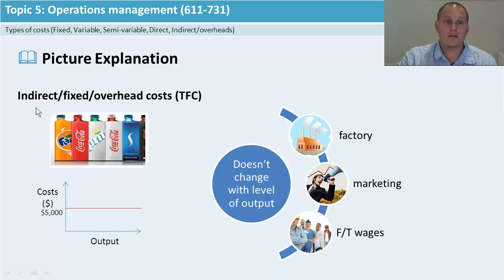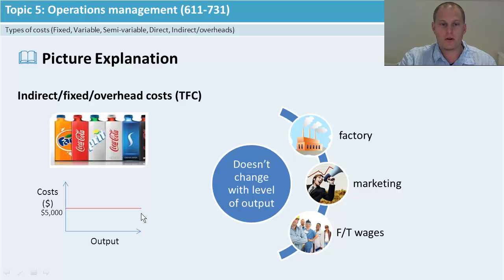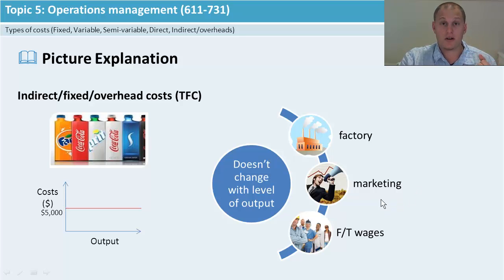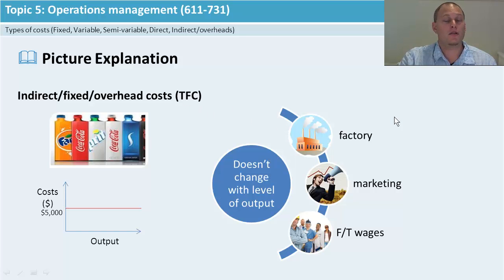The other side is the indirect, fixed, or overhead costs — these are your TFC. On the diagram, TFC just goes straight across, so even if you make nothing, the cost stays constant. In your factory this might be rent or mortgage payments at a fixed rate, your marketing costs for billboards and TV, and your full-time wages. Even if the factory's not running, you're still paying these. It doesn't change with the level of output. Add them all together and you get your total fixed cost.